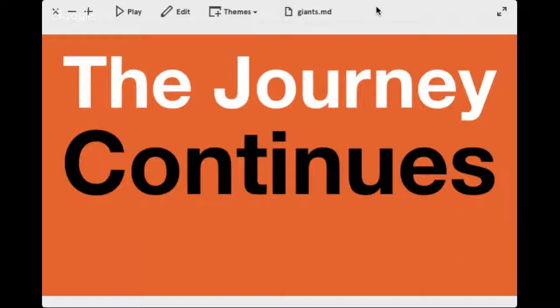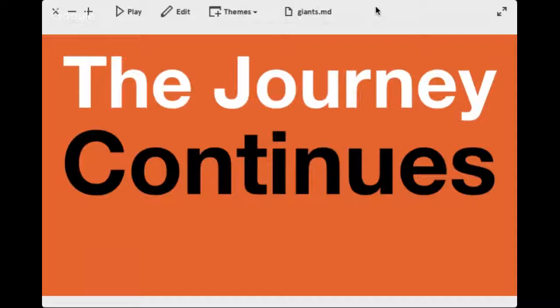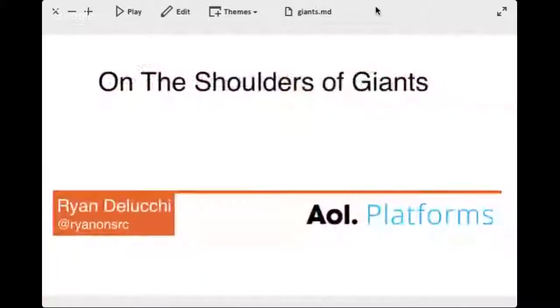Question from the audience: at the beginning of the presentation you had a listing of different features and traits characterizing functional programming, and you had in big letters 'strictly speaking' — was that a joke, because you don't mention laziness on the list? That's a good question. What do you think about laziness's role in all this? Laziness — if you're talking about it in the Haskell sense, I haven't actually worked in Haskell, but in Haskell everything is lazily evaluated. In Scala it's sort of inverted — everything is eagerly evaluated by default versus lazy.